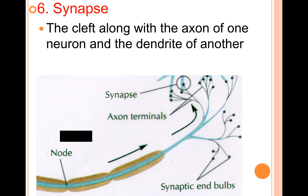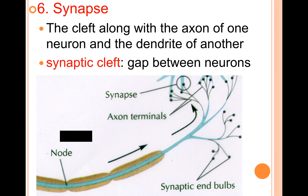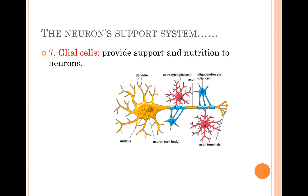The synapse is the cleft or space along with the axon of one neuron and the dendrite of another. For simplicity, we sometimes refer to the synaptic cleft — that's just the gap or space between neurons. Glial cells provide support and nutrition to neurons, and we're starting to understand they may provide more than this. In the diagram, you can see a yellow neuron with branches at either end, and glial cells attached to the neuron that provide this support and nutrition.